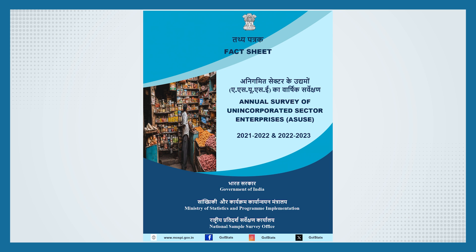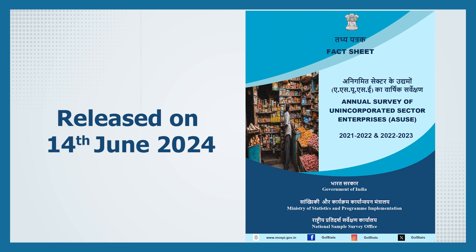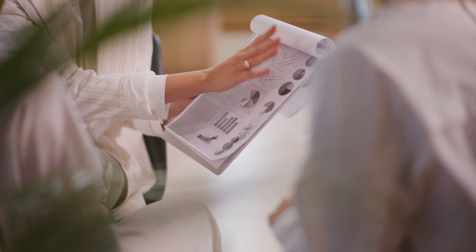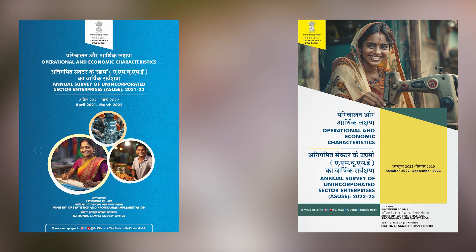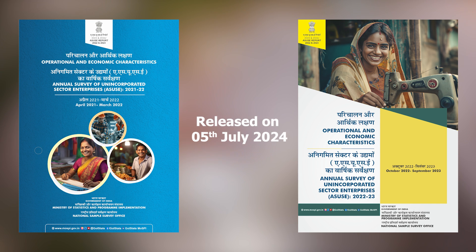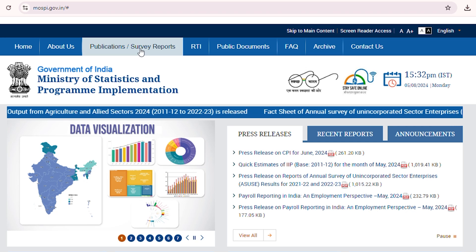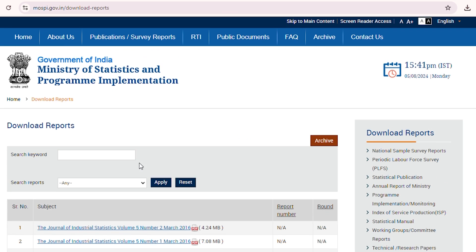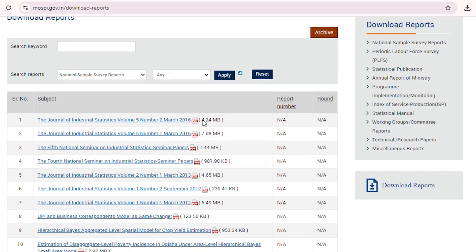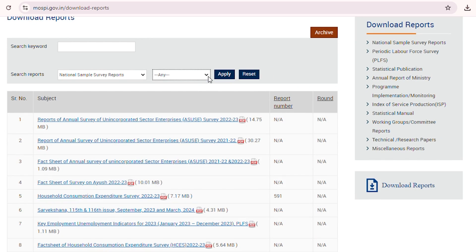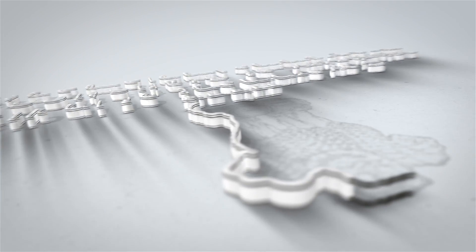The fact sheet summarizing the results of ASUS 2021-22 and ASUS 2022-23 was released on 14th June 2024. The detailed reports and unit level data were released by the Ministry on 5th July 2024 and are available on the Ministry of Statistics and Programme Implementation website.